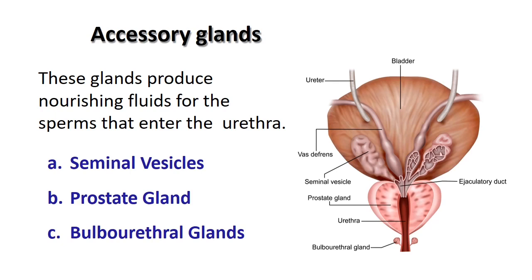Now we look at the accessory glands of the male reproductive system. These glands produce nourishing fluids for the sperm that enter the urethra. There are three accessory glands: the seminal vesicles, the prostate gland, and the bulbo-urethral gland, all situated alongside the urethra.